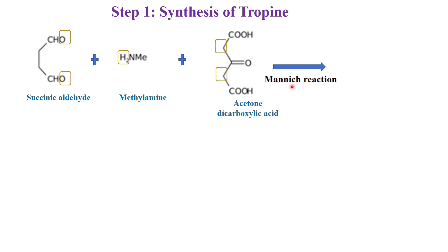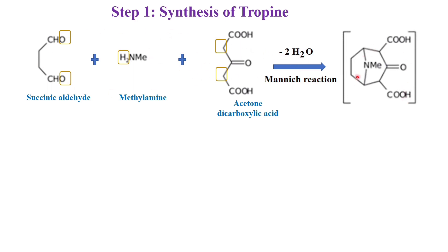On this Mannich reaction, one oxygen from here, one oxygen from here, two hydrogens, one hydrogen, and one hydrogen — totally 4 hydrogens with 2 oxygens — would be removed as 2 molecules of water. That would be cyclized and we are getting a bicyclic ring having a ketone and also 2 acid groups.